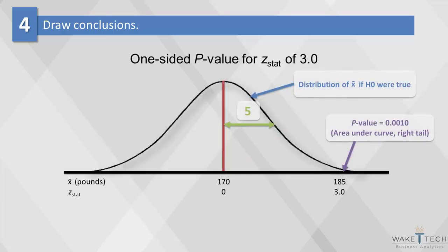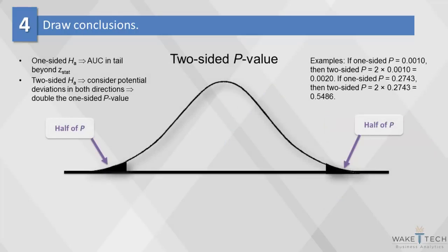Likewise, if we computed the p-values for z equals 3.0, we would get 0.001, which means we have to reject the null hypothesis that the mean weight has remained the same over time. Note that when we're looking at weight change instead of weight increase, all we have to do is multiply the one-sided p-value by 2 to do a two-tailed test.